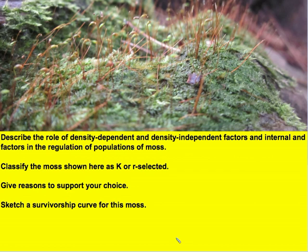As we close today, consider a plant example. In your picture, we have some moss — pioneers that are the first organisms to colonize bare rock. These moss are producing sporophytes, releasing thousands or perhaps millions of gametes into moist environments seeking fertilization, yet you don't get millions of new moss — only hundreds or thousands. Classify the moss as either K or R selected and give a couple of reasons to support your choice. Then, sketch a survivorship curve for this moss and be prepared to explain why you chose that particular curve.